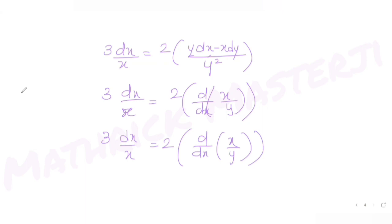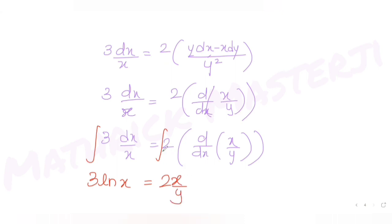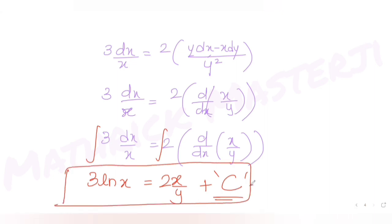Since I need to find the solution of the differential equation, I integrate both sides. Integrating gives: 3 ln(x) equals 2 times (x/y) plus a constant c, since the integral and derivative of x/y cancel each other.